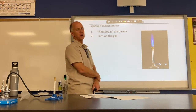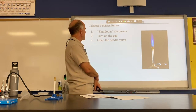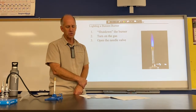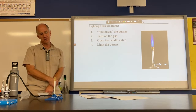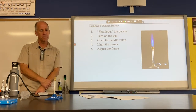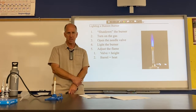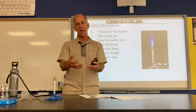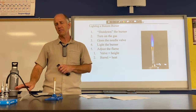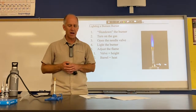Step two is to turn on the gas. Once you've done that, you will open the needle valve on your burner, which will allow the gas to flow. At this point you'll light the burner, but the flame will not be an efficient flame. You then adjust the flame: the valve adjusts the height of the flame, the barrel adjusts the heat. Then we'll bring in a ring stand, and when you're done, you shut off the gas at the wall valve — not the valve on the Bunsen burner itself.